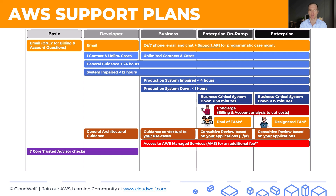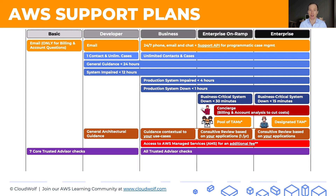Regarding Trusted Advisor: Basic and Developer plans include seven core Trusted Advisor checks. In Business, Enterprise on Ramp, and Enterprise plans, you get access to all Trusted Advisor checks. That's another important distinction for the exam.